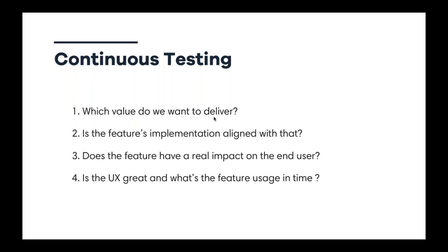The second question: after implementation, is the code aligned with that value? The third: we've deployed the feature in production — because the dev process doesn't stop after CI. The most important part comes when users start to play with the application. Does this feature have the real expected impact on users? We need to measure that as part of the testing activity.